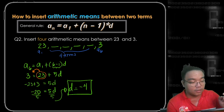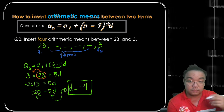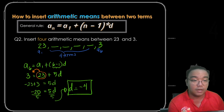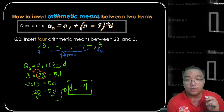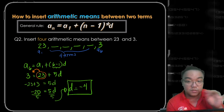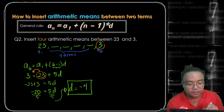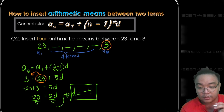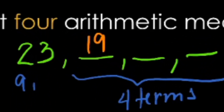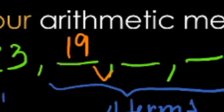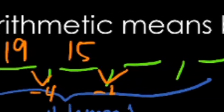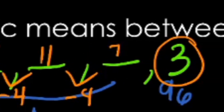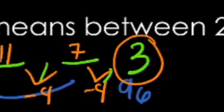With a common difference of negative 4, we insert those 4 terms between 23 and 3 by subtracting 4 each time. 23 minus 4 is 19, 19 minus 4 gives us 15, 15 minus 4 is 11, 11 minus 4 is 7, and 7 minus 4 gives us 3.